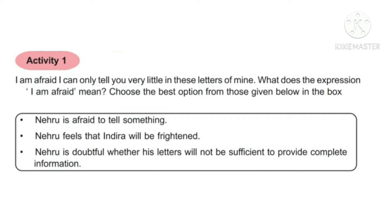Choose the best option. Option one: Nehru is afraid to tell something. Option two: Nehru feels that Indira will be frightened. Option three: Nehru is doubtful whether his letters will not be sufficient to provide complete information. That is the correct answer.